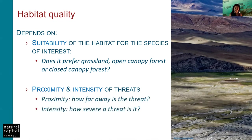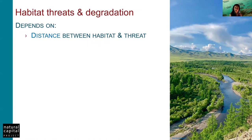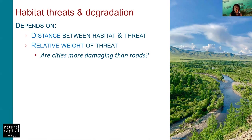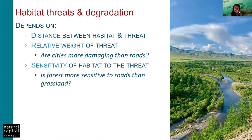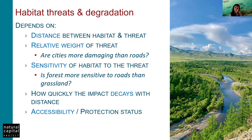We can ask questions such as how far away is the threat or how severe is the threat. Habitat degradation depends on the distance between the habitat and the threat, as well as the relative weight of the threats — for instance, are cities more damaging than roads? Sensitivity of the habitat to threats also matters, such as whether forest is more sensitive to roads than grassland, or how quickly the impact decays over a distance — linear or exponential. We can also account for accessibility or protection status, where more protected habitats are less likely to get degraded by illegal harvesting or hunting, though this does not help address threats like pollution which can transcend boundaries.